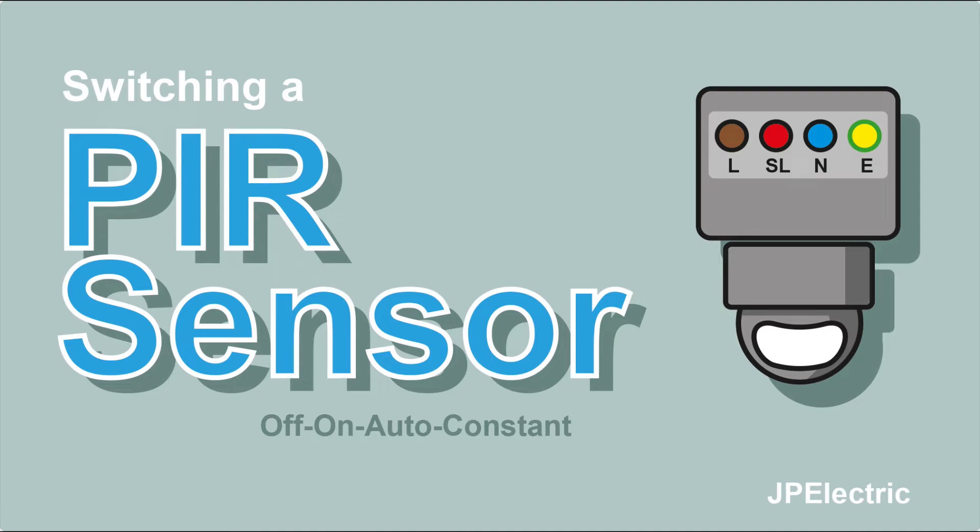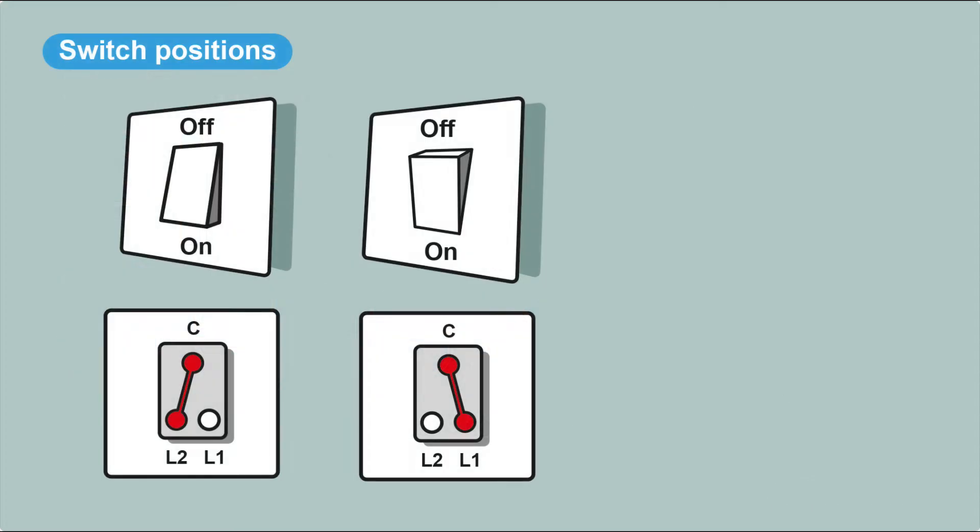Okay, so today we're going to look at PIR sensors and how we can switch them. Let's have a quick look at the switch now. In the off position, the contacts are between common and L2. In the on position, the contacts are between common and L1. Knowing that is quite important when it comes to switching a PIR.